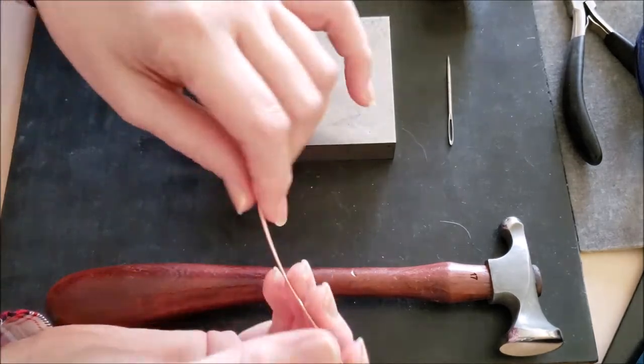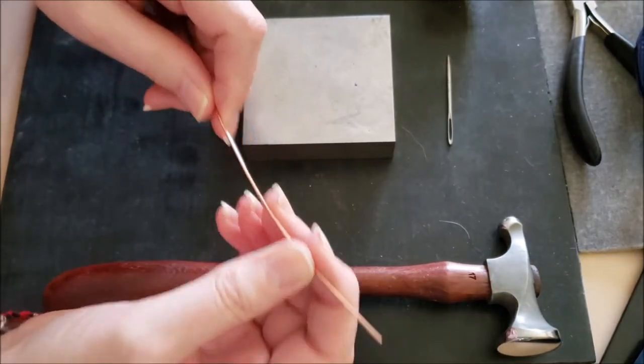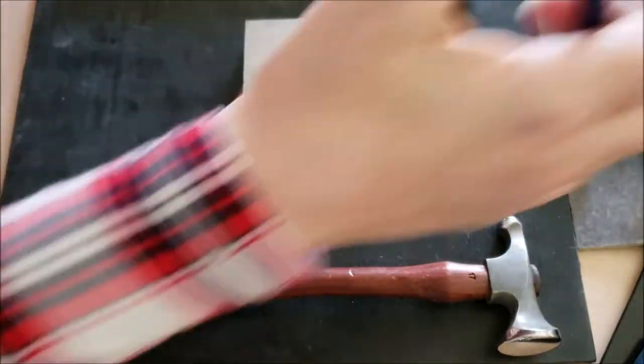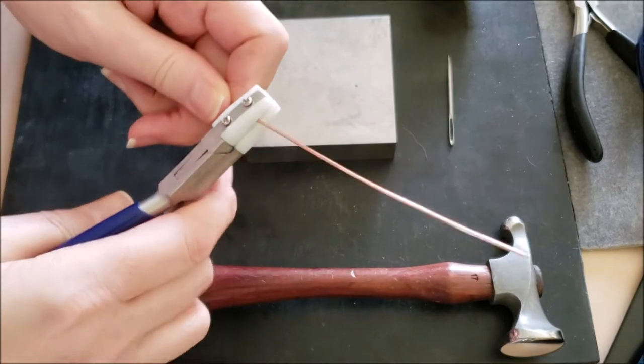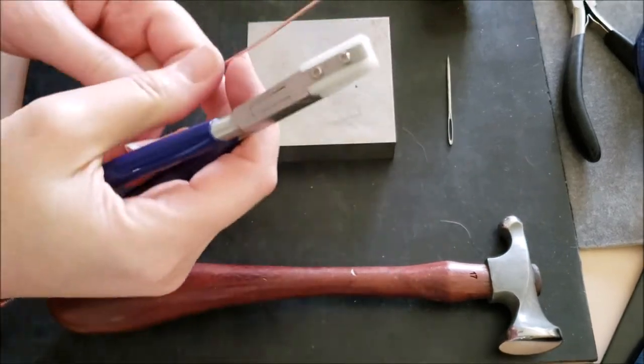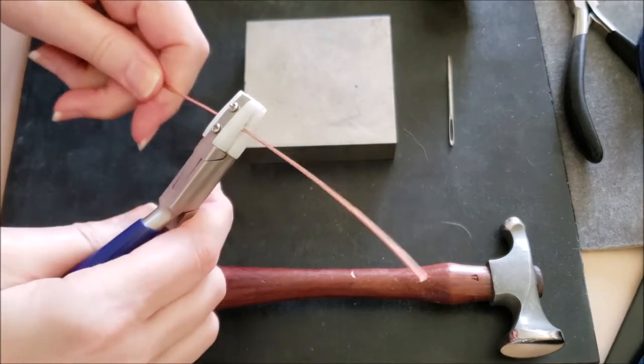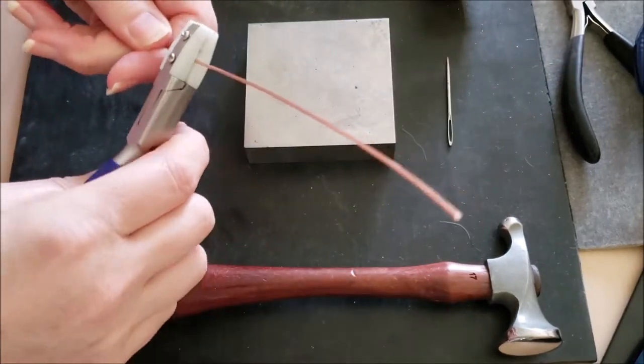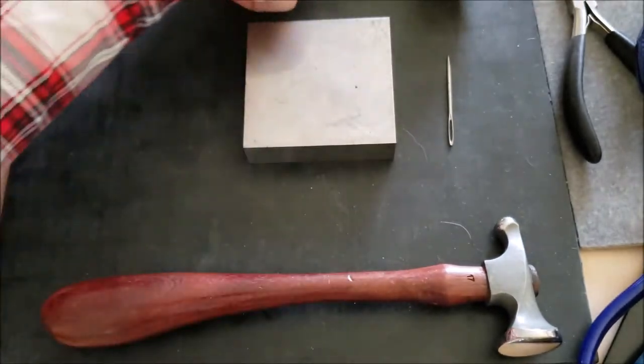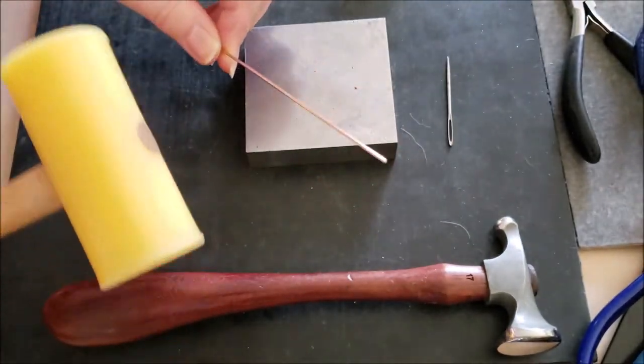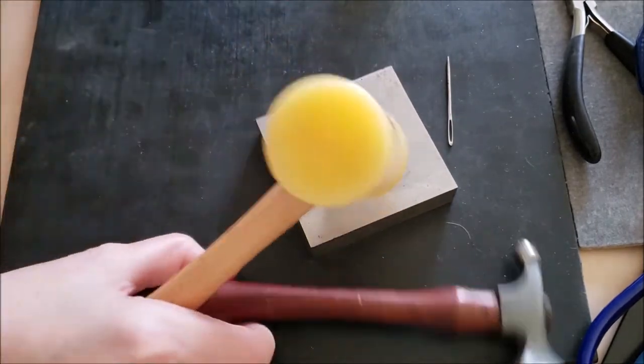So first thing I'd like to show you how to do is how I straighten out wire. Now, 16 gauge, you can, if you've got some nylon jaw pliers, you can pull it through your nylon jaw pliers and that will help. But that can get a little dicey simply because wire is slippery.